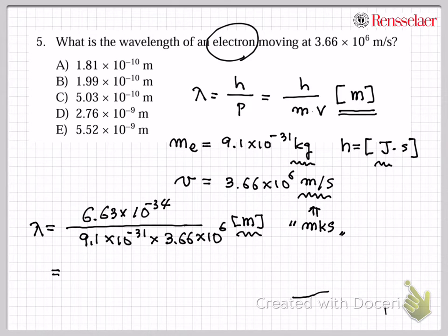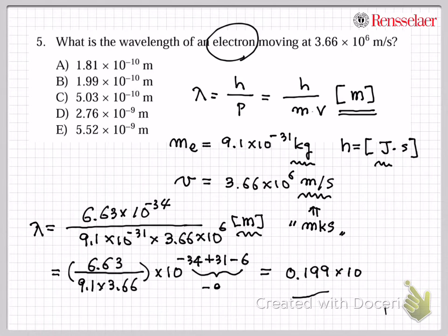So the way that I solve this problem, I would recommend you to sort it out. 6.63, 9.1, 3.66 on one side. And work with the power, which is minus 34 plus 31 minus 6. And that will lead me to get 0.199, so this one comes together, will be minus 9. So that will make me 1.99 times 10 to the minus 10. And we have answer here, which is B.